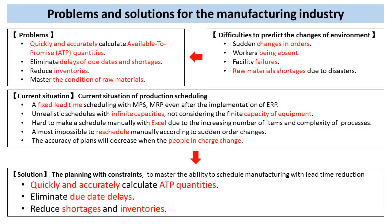Problems and solutions for the manufacturing industry. There are common problems in the manufacturing industry, such as quickly and accurately calculating available to promise, eliminating delays of due dates and shortages, reducing inventories, and mastering the condition of raw materials.